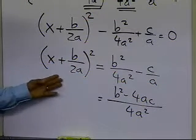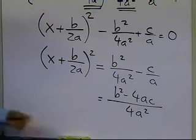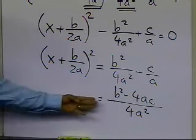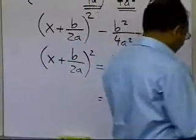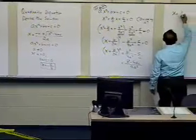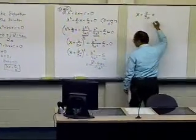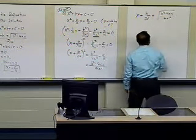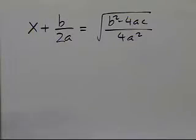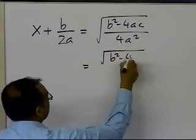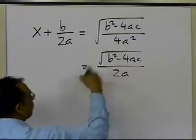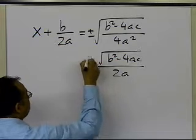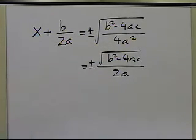And now what I'm going to do is take the square root of both sides. That's when I get the plus and the minus part of it, because when I take the square root of both sides this can be plus or minus. So I'll get x plus b divided by 2a is equal to plus or minus the square root of b squared minus 4ac divided by 4a squared. Then I can write this as plus or minus the square root of b squared minus 4ac divided by 2a, because the square root of 4a squared is 2a, and both are possibilities when you take the square root of both sides.